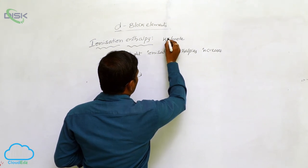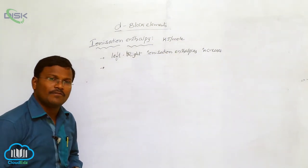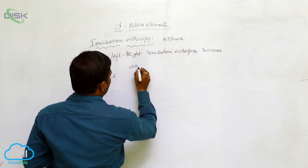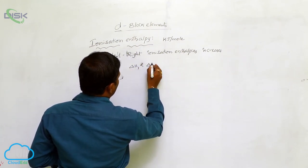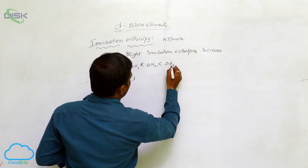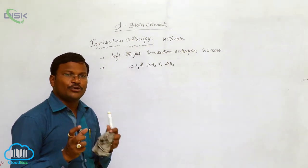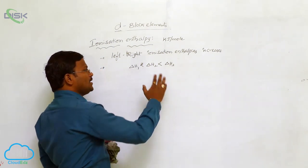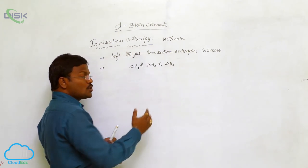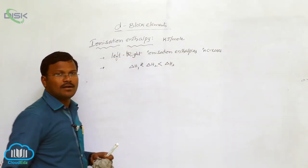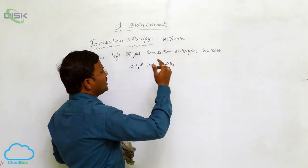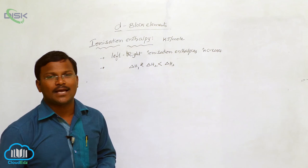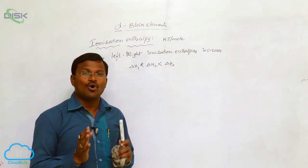Ionization enthalpy is expressed in kilojoules per mole, and the values vary as follows: ΔH1 < ΔH2 < ΔH3. To eliminate the first electron from a neutral atom requires less energy than to eliminate the second electron from the same atom, and eliminating the third electron requires even more energy. One more factor influencing ionization enthalpies of d-block elements is more stable electron configuration — due to half-filled or fully-filled d-orbitals.